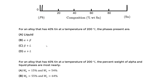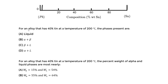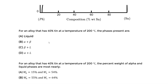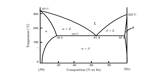The question asks: for an alloy that has 40% tin at a temperature of 200°C, what phases are present? Is it liquid, alpha and beta, beta plus liquid, or alpha plus liquid?